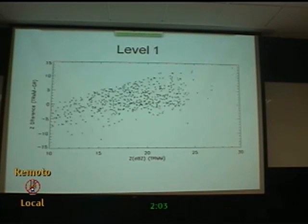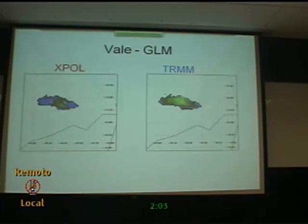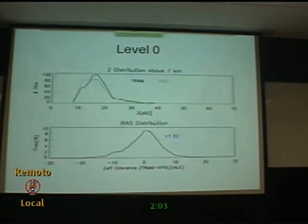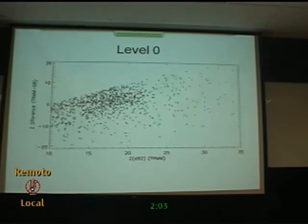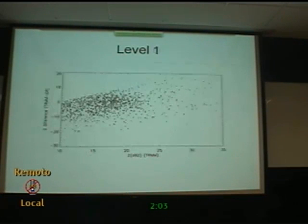For the GOAmazon/Vale campaign — considering only November and December — the reflectivity distributions from the polarimetric radar and TRMM PR are quite close to each other. The bias we found is 1.9 dB at level zero. After correcting for attenuation, it increases by another 2 dB, going to 3.9 dB — indicating an overestimation by the X-band radar. We also see more points exhibiting the reflectivity-dependent bias behavior, both at level zero and level one.